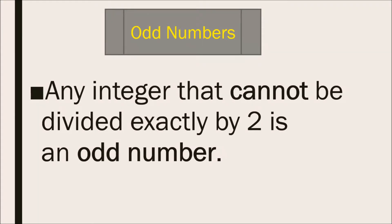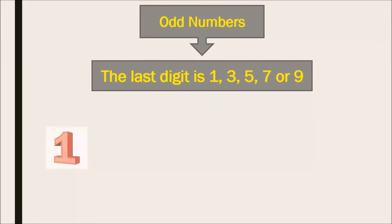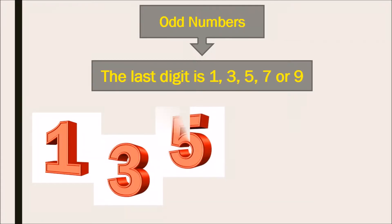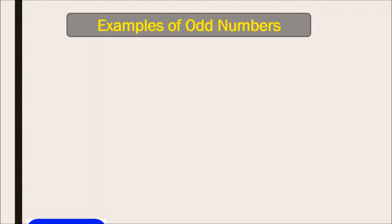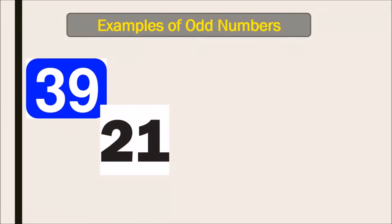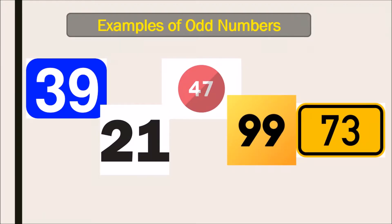Now, odd numbers end in one, three, five, seven, or nine. Let's see some examples of odd numbers: thirty-nine, twenty-one, forty-seven, ninety-nine, seventy-three. These are some examples of odd numbers.